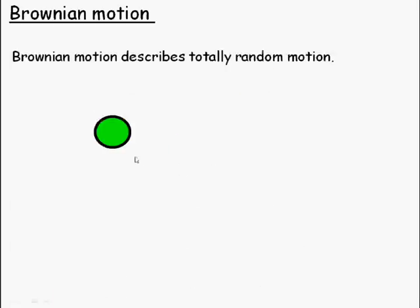Watch the green ball bounce around. Is there any pattern to its motion? Is it predictable? A guy called Robert Brown observed this through a microscope some time ago, and he described this motion as completely random. He named this motion after himself—he called it Brownian motion.